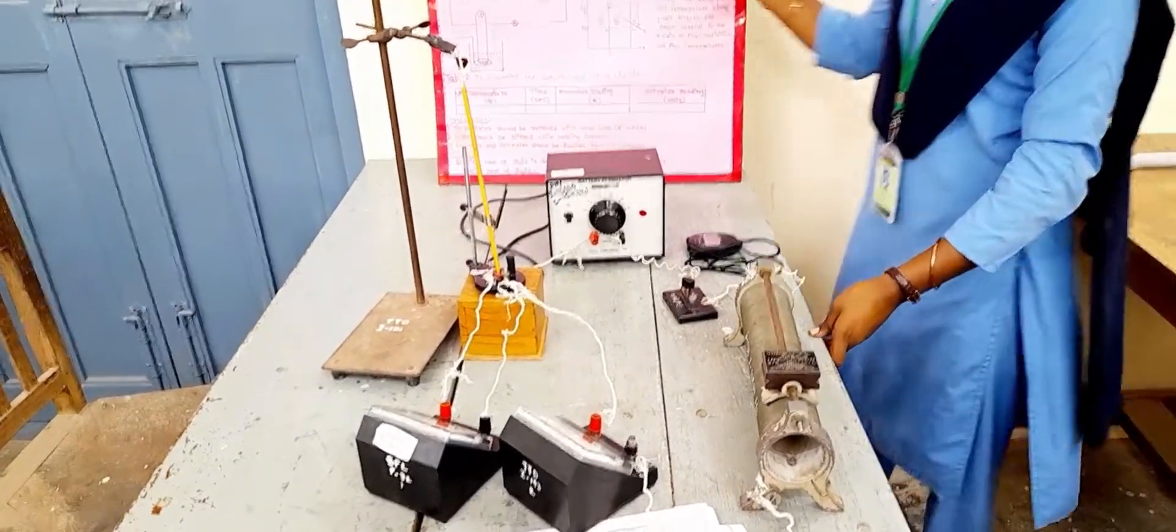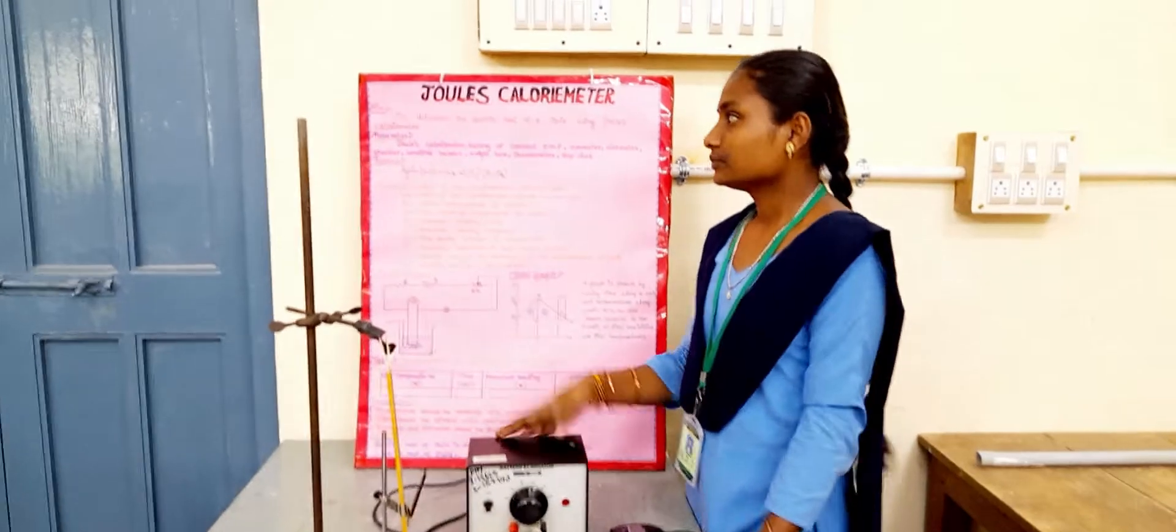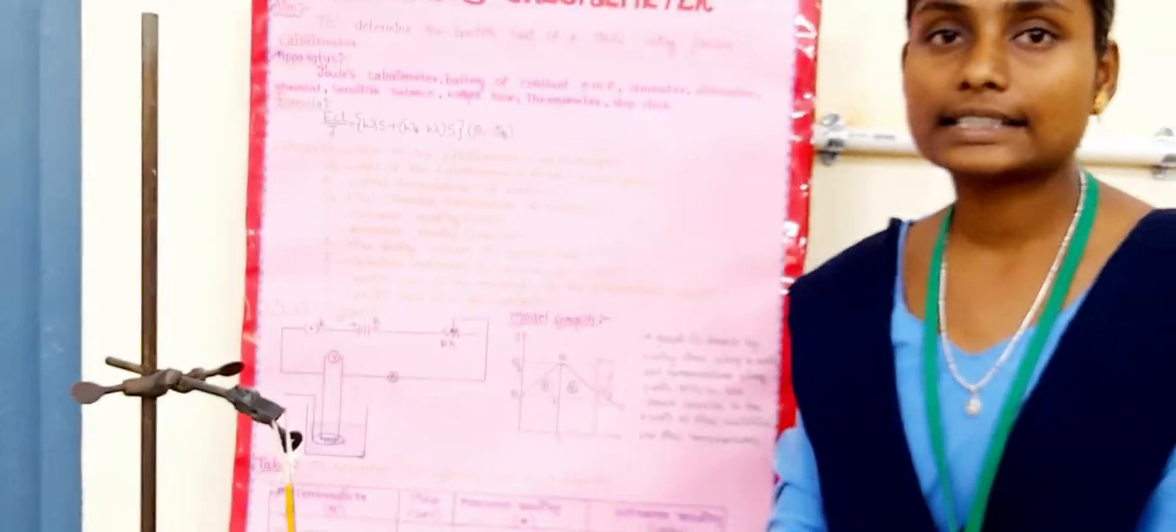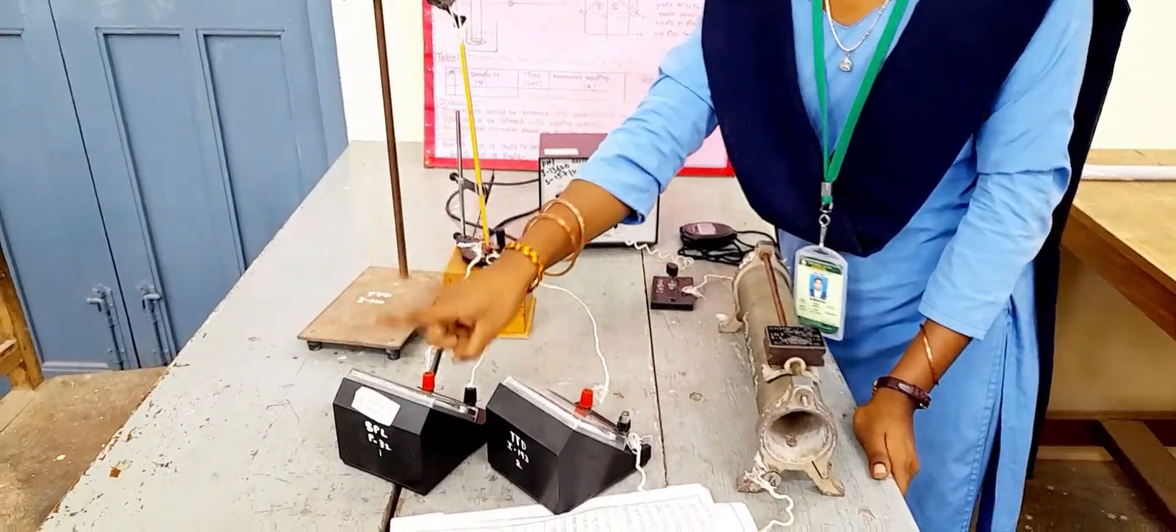Next, we need the apparatus like Joules calorimeter and battery eliminator, plug key, rheostat, ammeter, voltmeter.